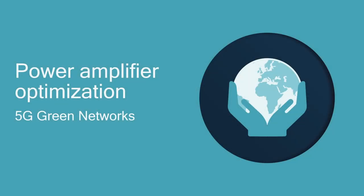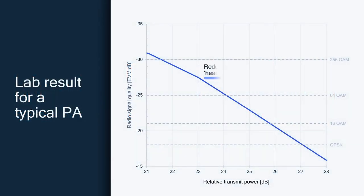In our first demonstration, we will be focusing on power amplifier optimizations. Power amplifiers are a major source for power inefficiency in base stations, since they are operated at a very inefficient operating point. If one would try to increase the power efficiency of the power amplifiers by reducing the power amplifier headroom, the result would be a significant loss in signal quality.